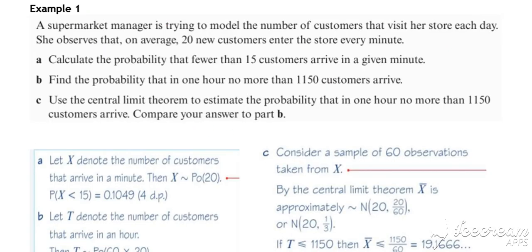So in example one, we've got a Poisson setup. We've got X follows a Poisson distribution, 20 new customers enter the store every minute. So an average, constant average rate of 20 per minute. Part A, calculate the probability that fewer than 15 customers arrive in a given minute.